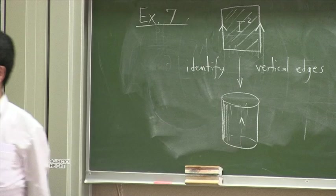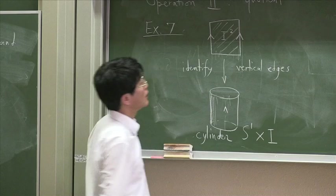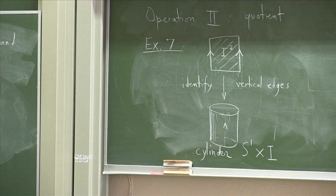So, what we find is, the result is a cylinder. And what is a cylinder? It is S^1 cross I. So, I took this quotient, we say, of I^2 and I ended up with S^1 cross I. S^1 component is this component and I component is the vertical component.